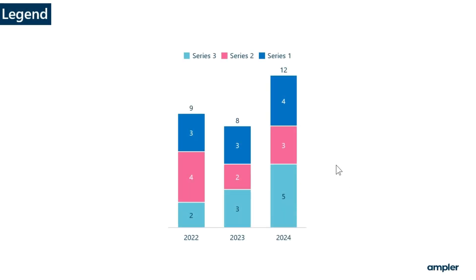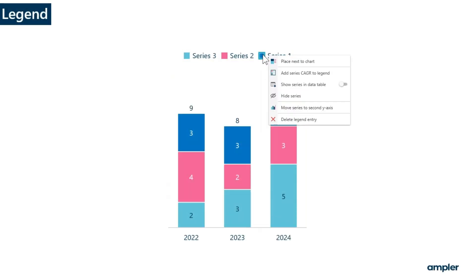Right click on one of the series labels in the legend to open the context menu. From the menu, you have options to place next to the chart, add series keggers to legend, show series in data table, hide series, move series to secondary axis, or to delete the legend entry.